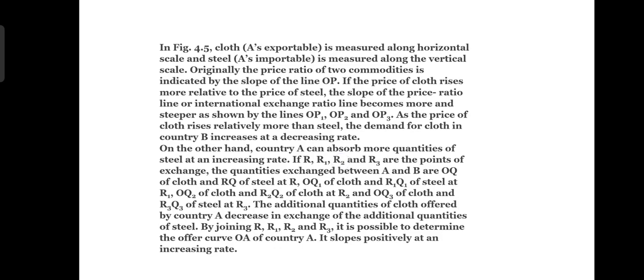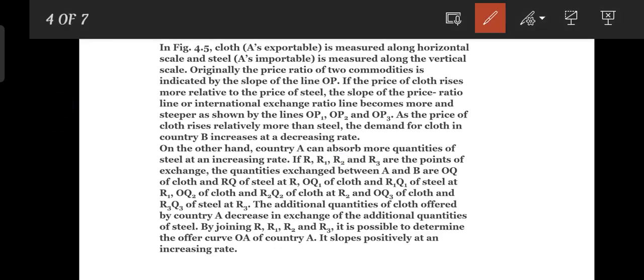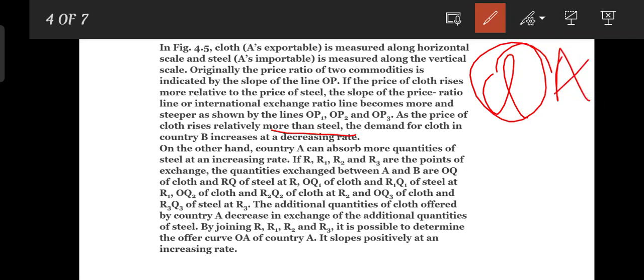Moving on: as the price of cloth rises relatively more than steel, the demand for cloth in country B increases at a decreasing rate. The quantity exchanged between A and B are OQ of cloth and RQ of steel, represented by exchange points R, R1, R2, and R3.